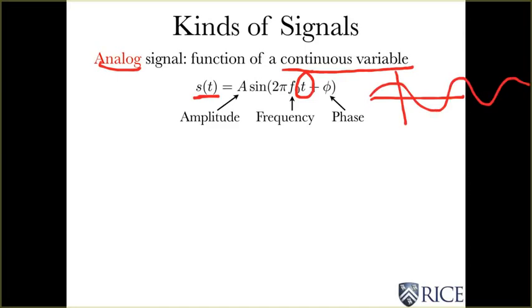The sinusoid, the sine wave, is governed by three parameters. First is the amplitude, which determines how big the signal is. The frequency, f0, determines how often the peaks occur.